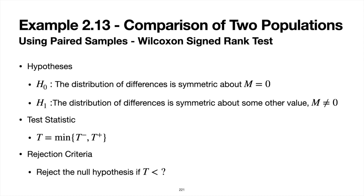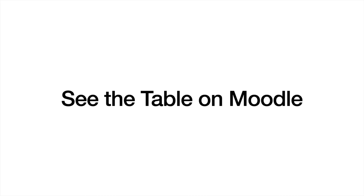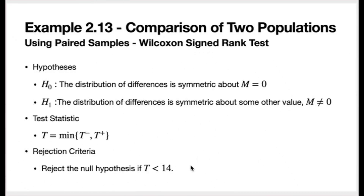We need to determine the rejection criteria. Because of the way the table for the Wilcoxon signed rank test is structured, all of these tests involving the Wilcoxon are left-tailed tests. With a sample size of 12 and a two-sided test at a desired significance level of 0.05, according to table A9 the appropriate critical point is 14. The rejection criterion is to reject the null hypothesis if the test statistic T is less than 14.